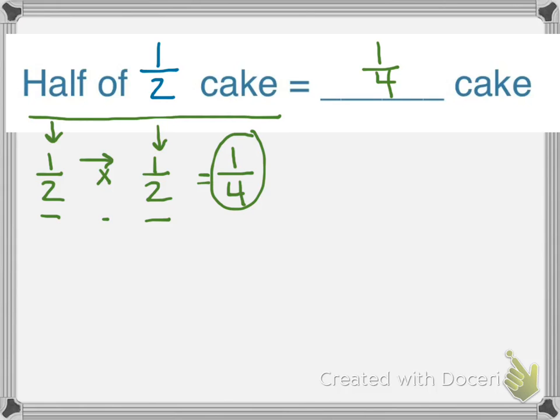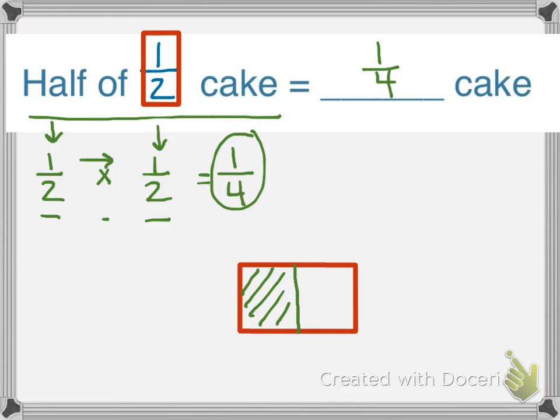Now most of the time they ask us to draw a model to represent our thinking. So I'm going to draw this rectangle, which will symbolize my cake pan. Now it's telling me that I have to partition my cake pan in half. So I'm going to partition my cake pan in half, and I'm going to shade one half of my cake pan. I'm going to label this as one half.